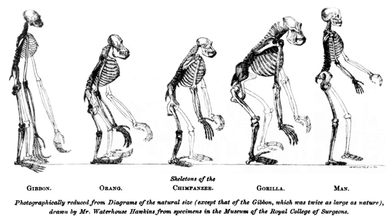This change happens over a relatively short amount of time compared to the changes termed macroevolution, which is where greater differences in the population occur. Population genetics is the branch of biology that provides the mathematical structure for the study of microevolution. Ecological genetics concerns itself with observing microevolution in the wild.